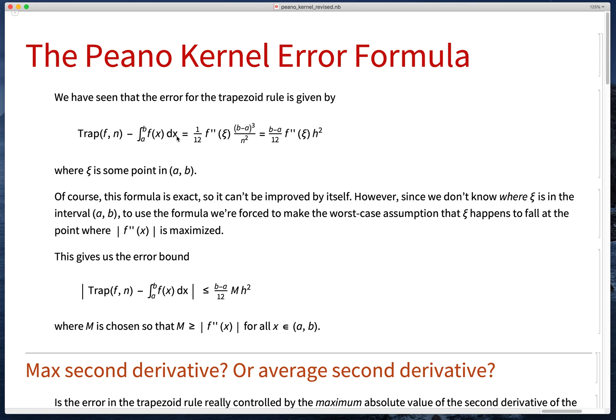Now this is an exact formula for the error, but when we apply this formula we don't know where this point ξ is in the interval. So to use the formula we have to make a worst-case assumption that ξ is the maximum value of f'', and that gives us our error bound that it's less than or equal to (b-a)/12 × M×h², where M is our bound on the second derivative.